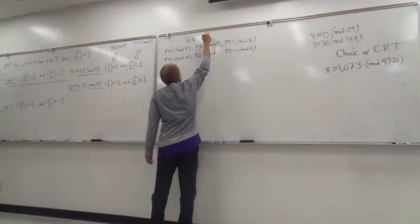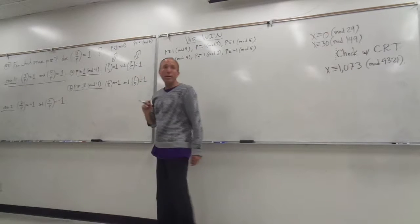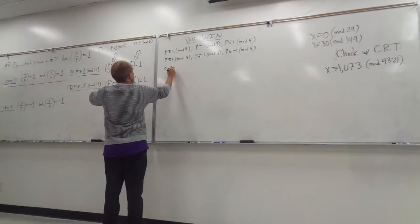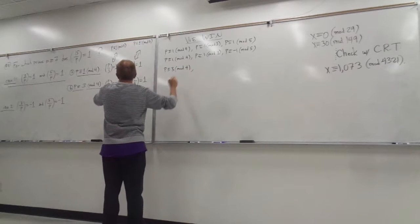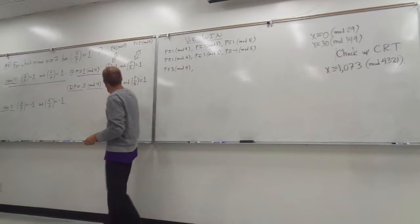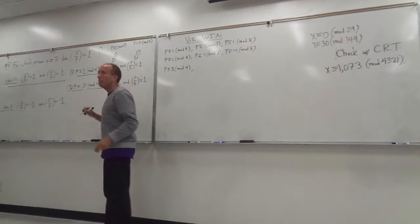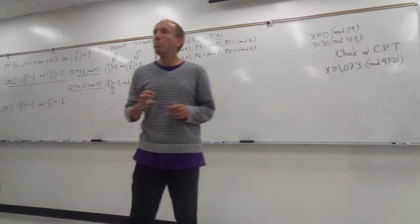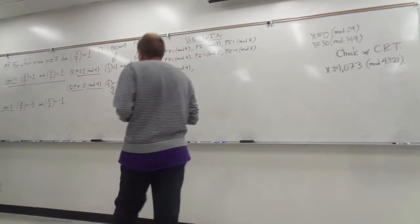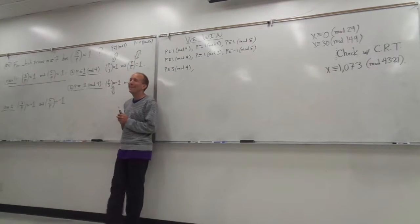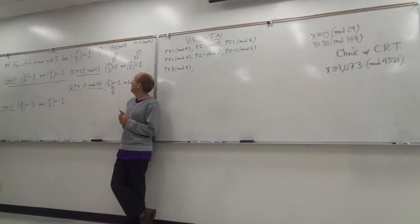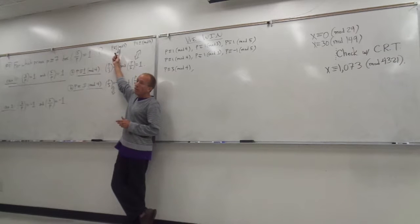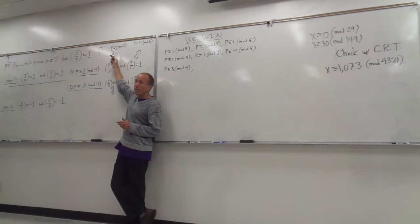So we win in all of these cases. What else do we win? We also win if p is congruent to 3 mod 4. Which primes are these, where the Legendre symbol of p with respect to 3 would be equal to negative 1? What numbers in mod 3 are not perfect squares? The Legendre symbol of p with respect to 3 is plus 1 if p is congruent to 1 mod 3.